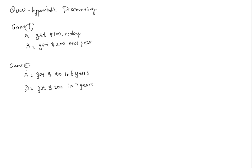Either you get $100 today or you get $220 next year. In the next game, game two, you either get $100 in six years or you get $200 in seven years.